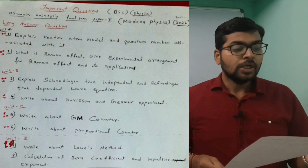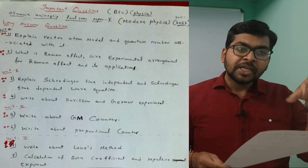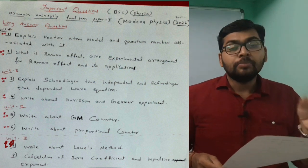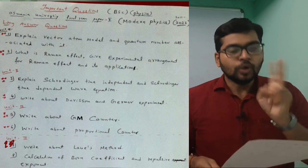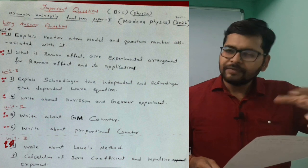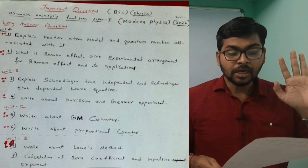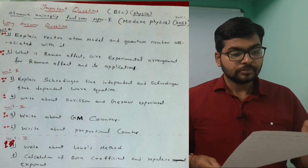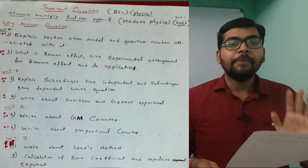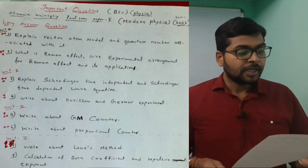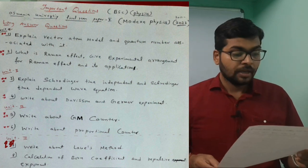For second unit, explain Schrödinger time independent and Schrödinger time dependent. Both are important - either of this one, you have to study. Don't get confused, but it is very very much important like Raman effect in first unit. Fourth question: Write about Davison and Germer experiment.